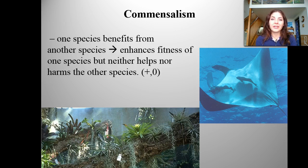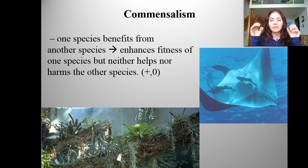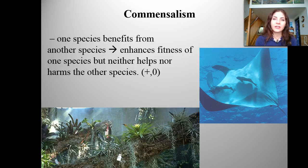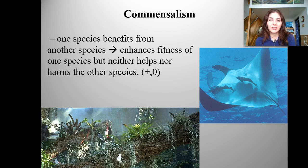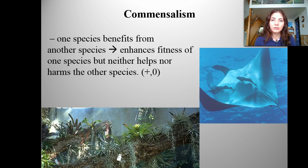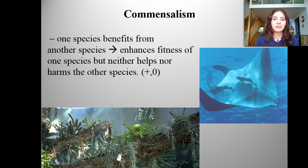Another example of commensalism would be cows and cowbirds. As cows graze, they're actually kicking up insects, and egrets or cowbirds will come and feed on those insects. The egrets aren't really affecting the cows at all — the cow's not benefiting but it's not being harmed. However, the egrets are actually benefiting because as the cows walk they're kicking up insects that the egrets can eat.